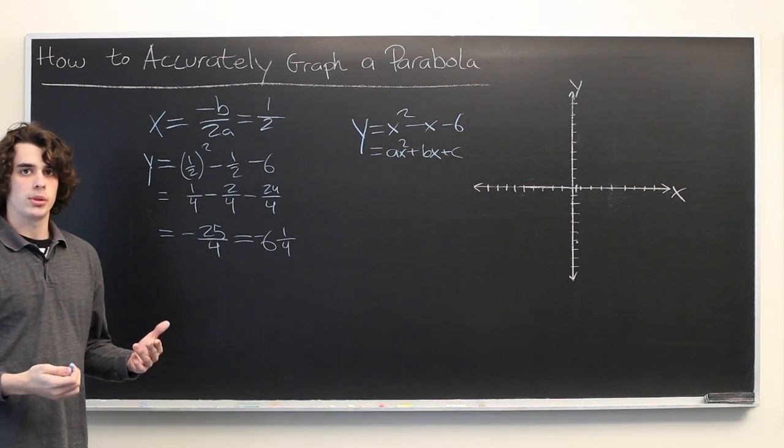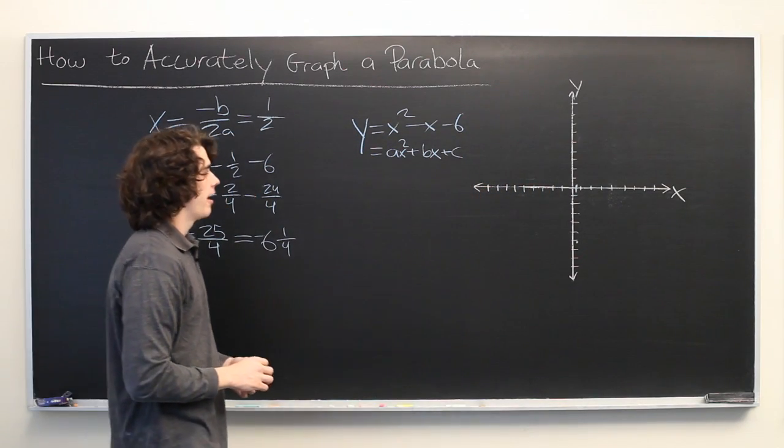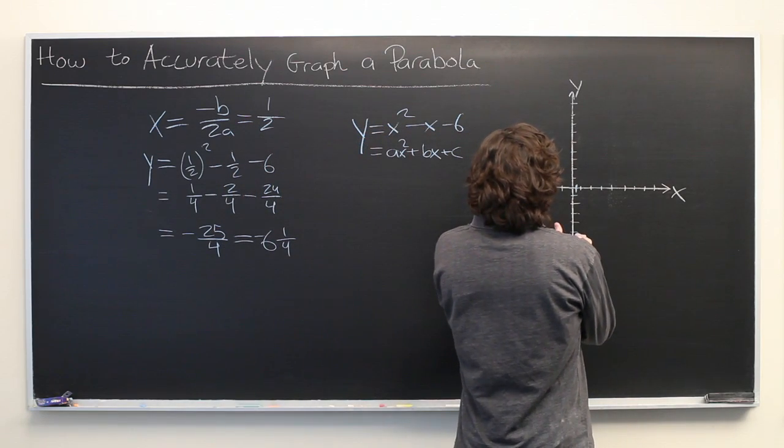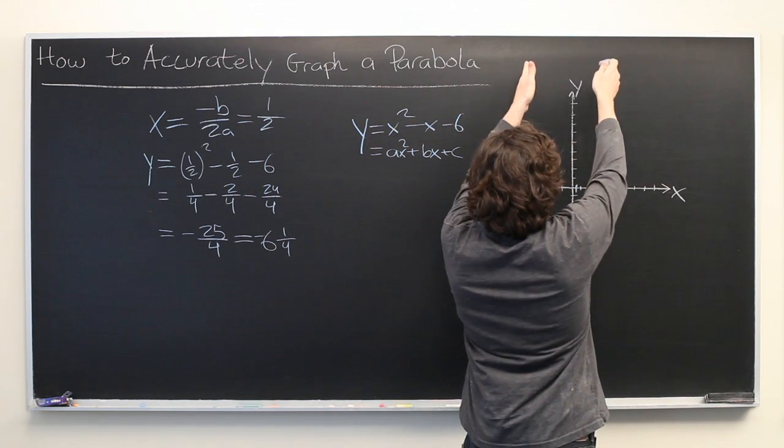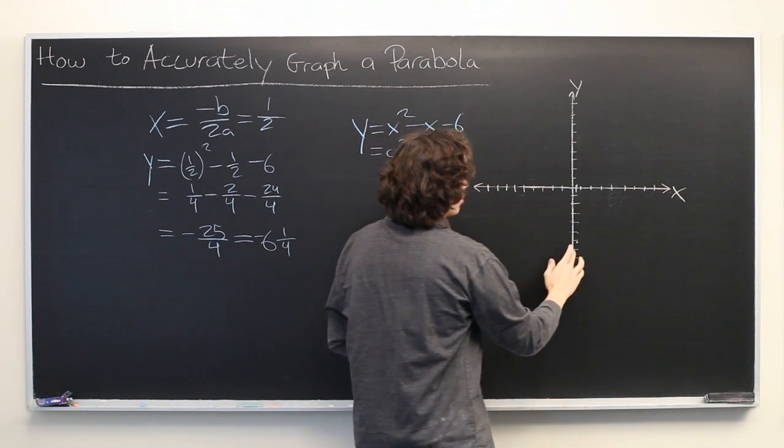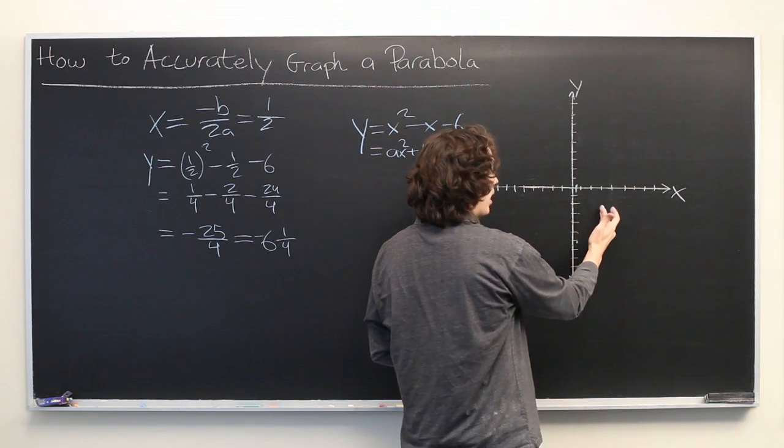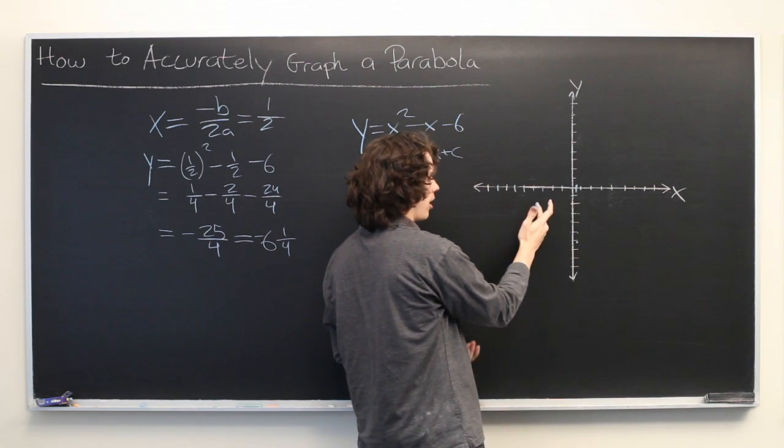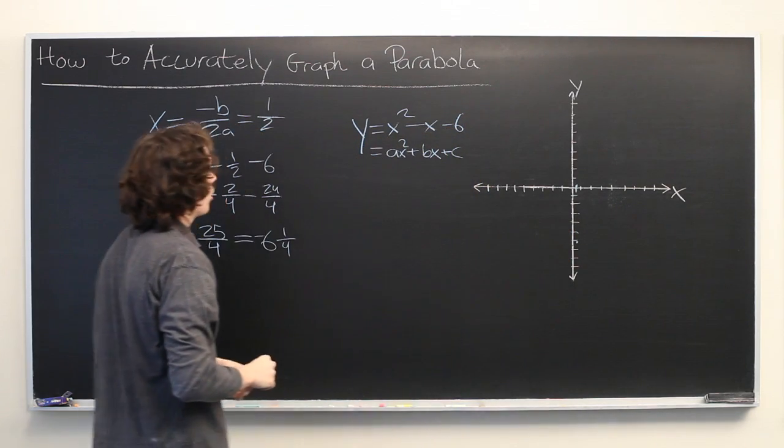And you might be wondering why we would need to know where the vertex is. It's important to know because the nature of a parabola is that it will be symmetric about the vertex. So, any y-coordinate on the right half of the parabola will be mirrored by a y-coordinate on the other half.